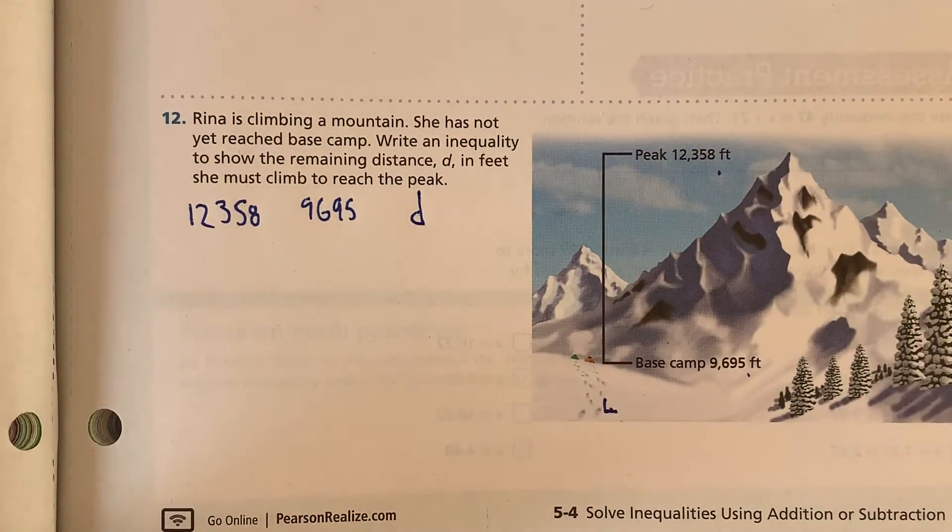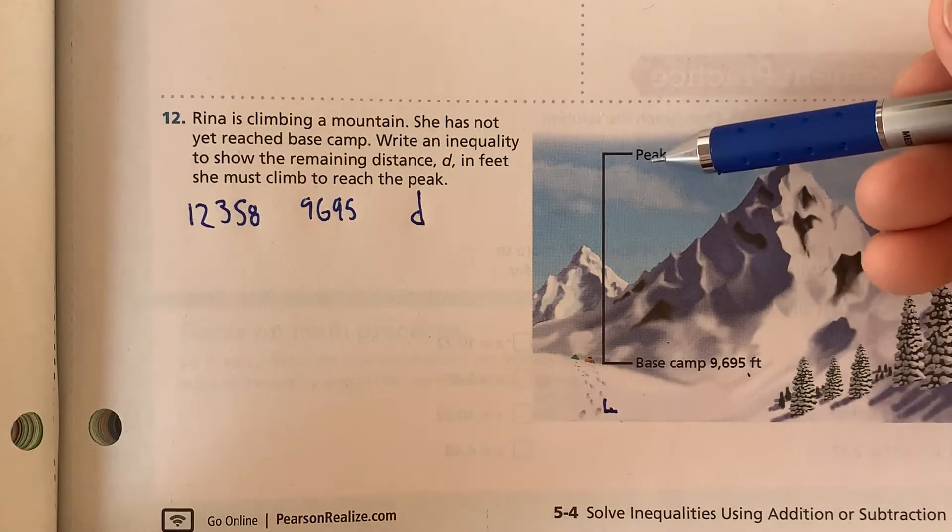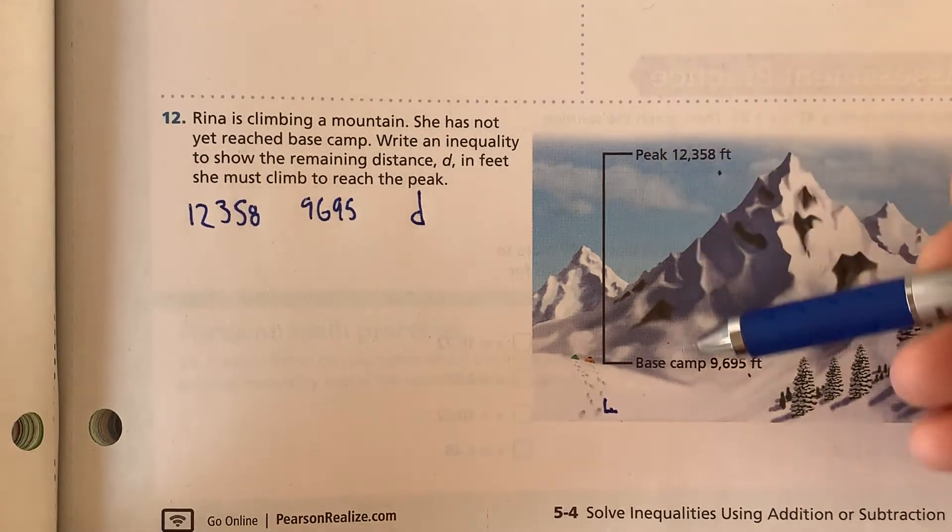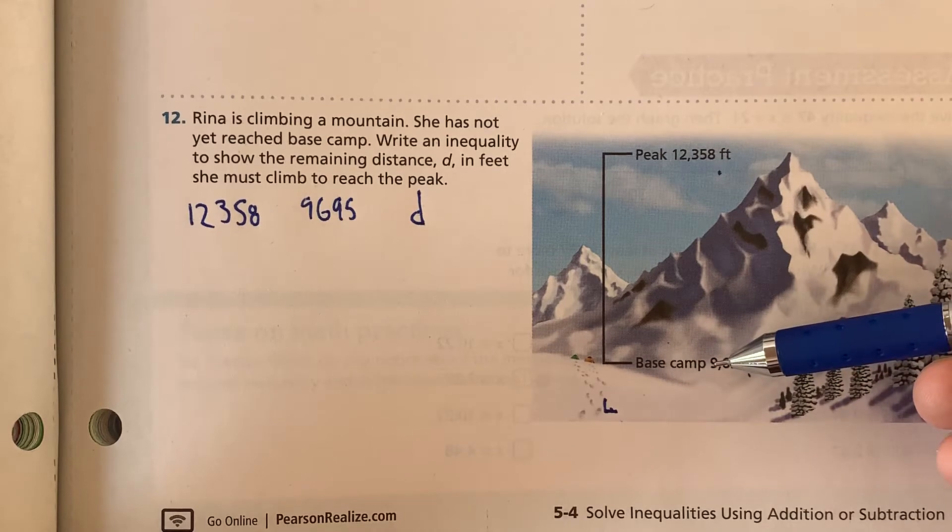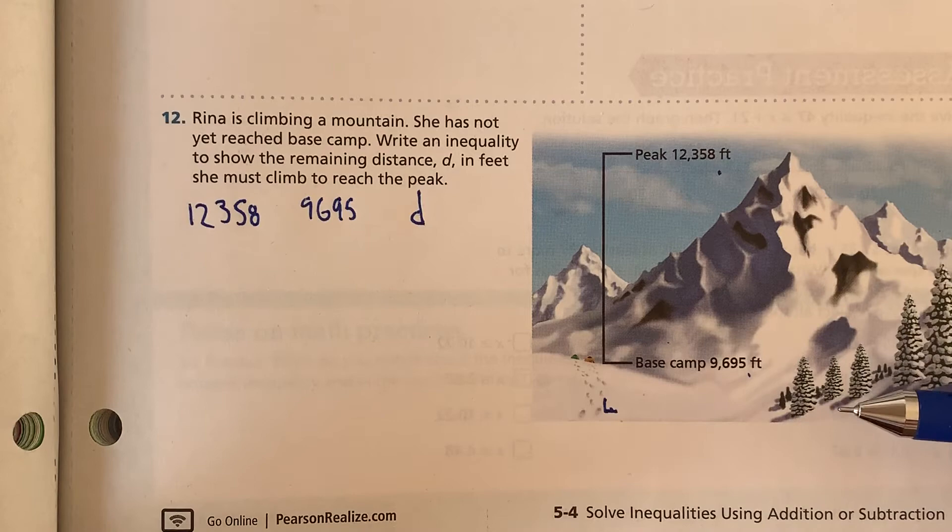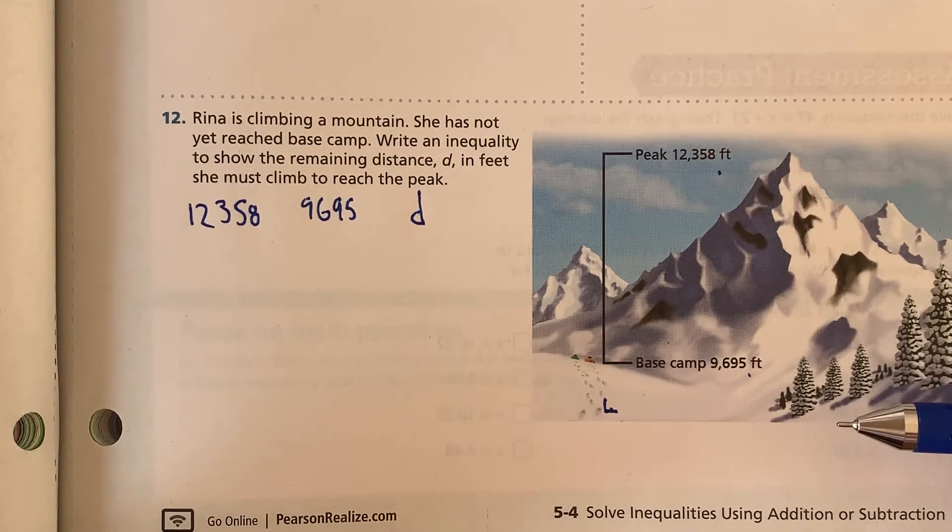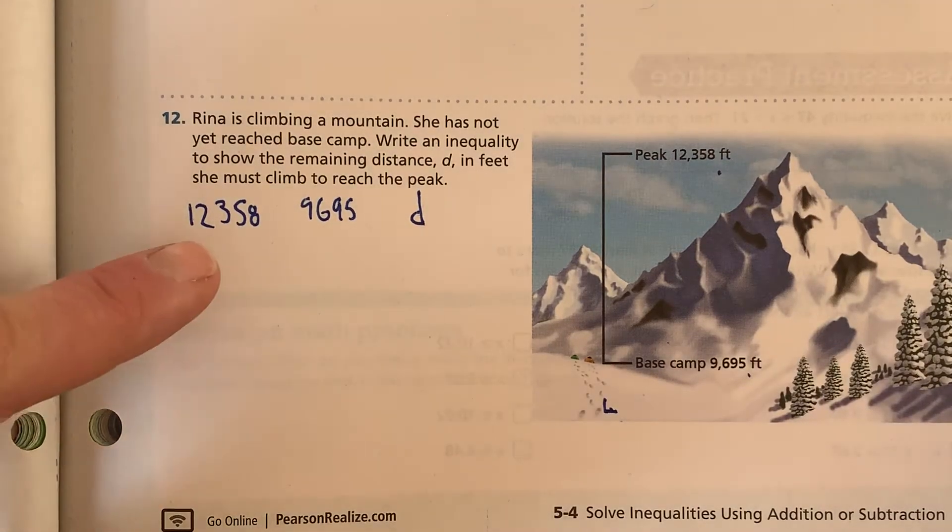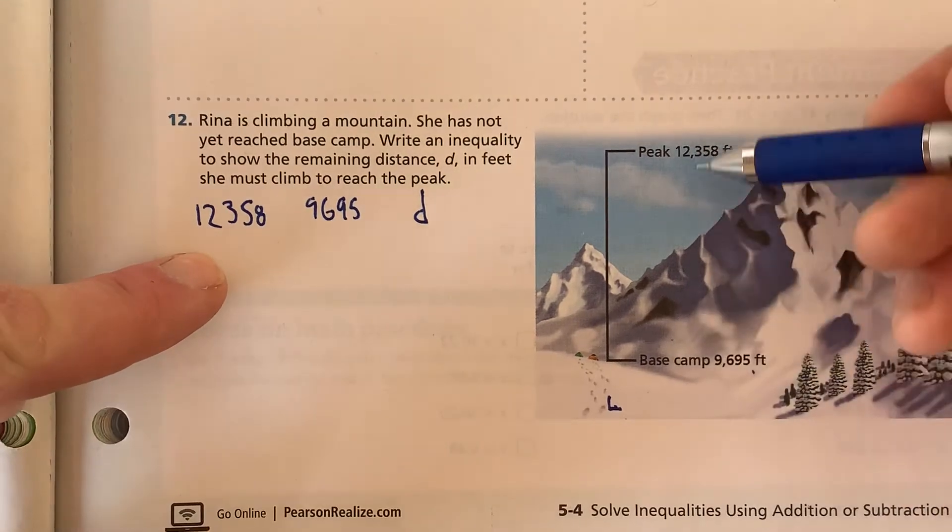Now, if we look at the wording of this, the bare minimum we would have to do is base camp to peak. So to figure out the difference, the distance from base camp to peak, we're going to have to do a subtraction problem.